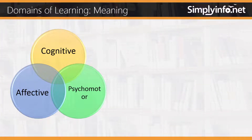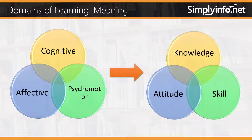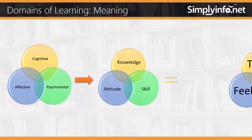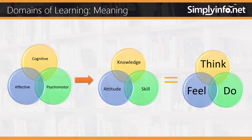Domains of learning meaning: Cognitive domain means gain knowledge — equal to think. Affective domain means develop attitude — equal to feel. Psychomotor domain means improve skill — equal to do.